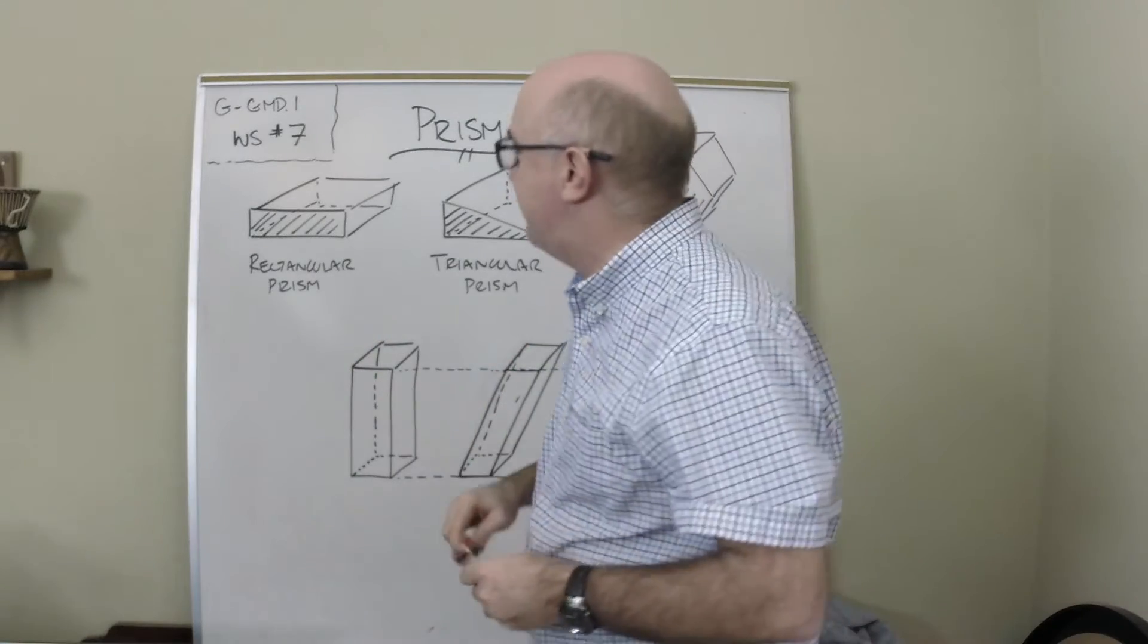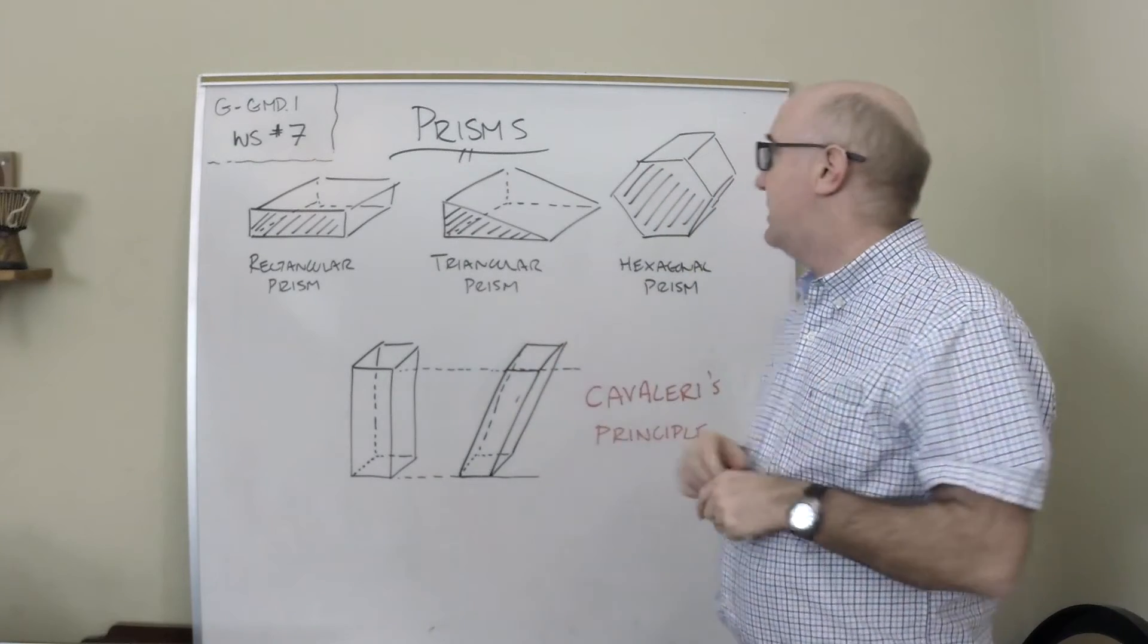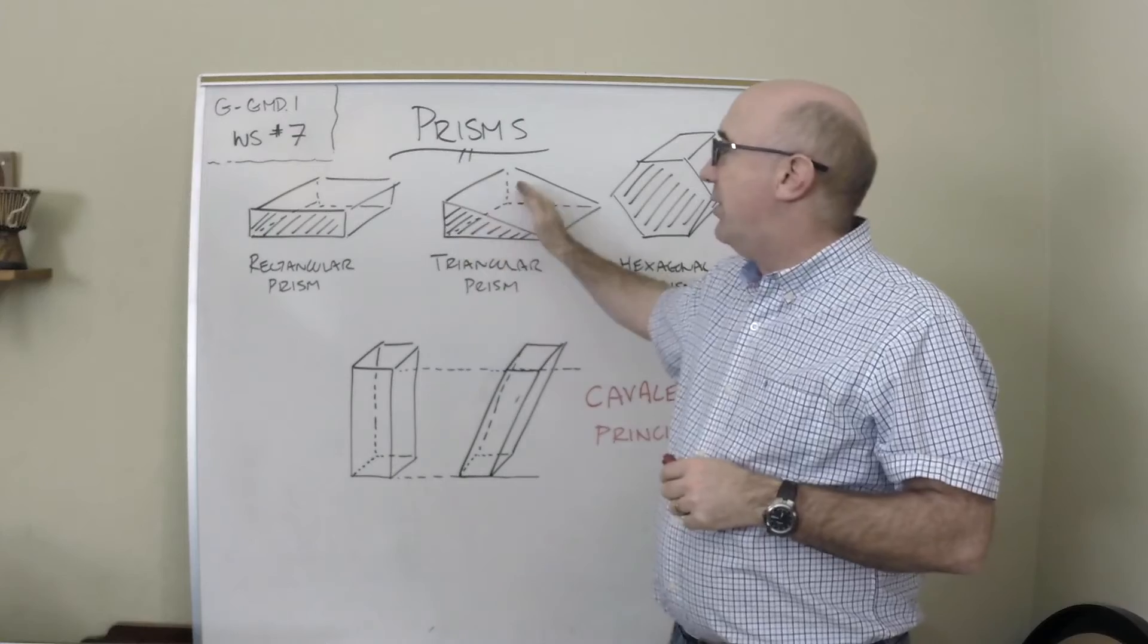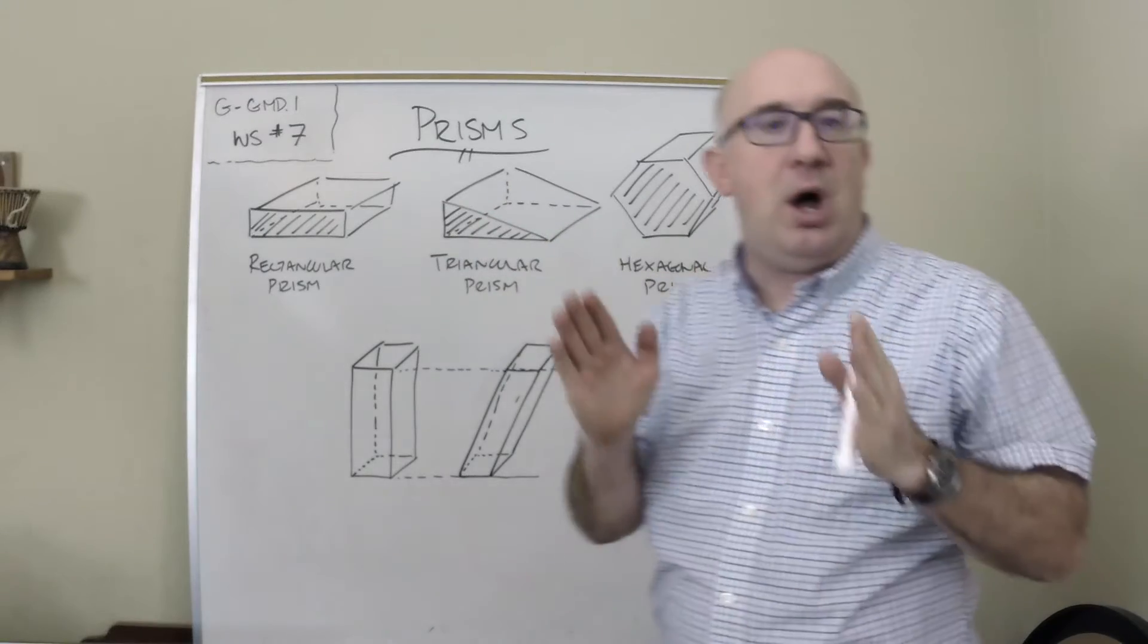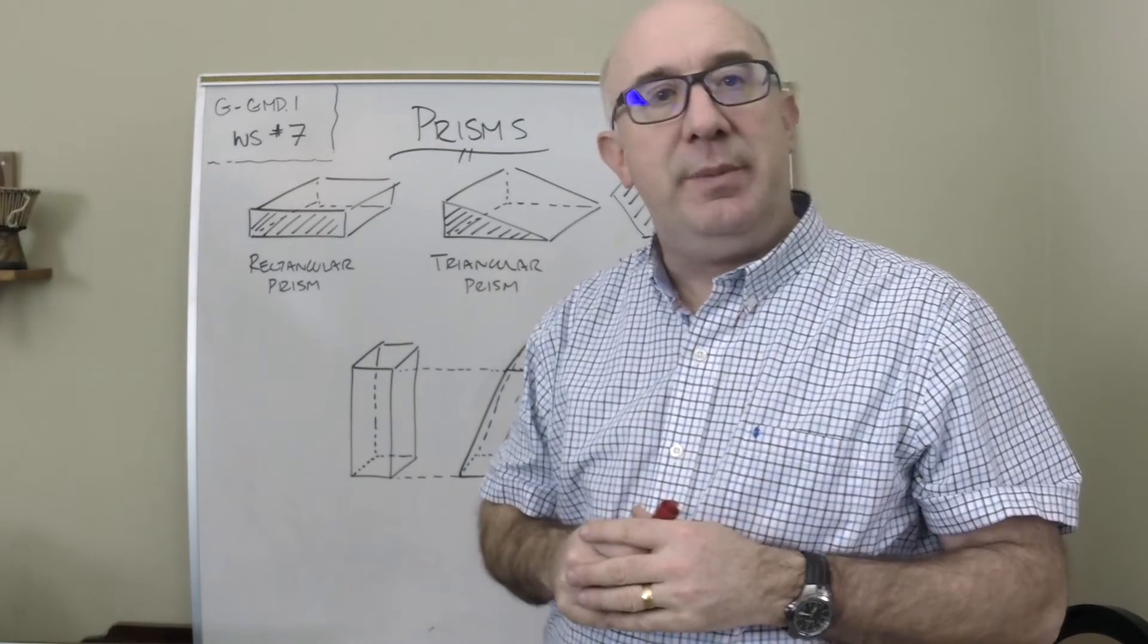A prism has some characteristics that set it alone as its own thing. First of all, there will always be two identical, opposite, parallel bases, and then the bases will be connected through rectangles or squares.